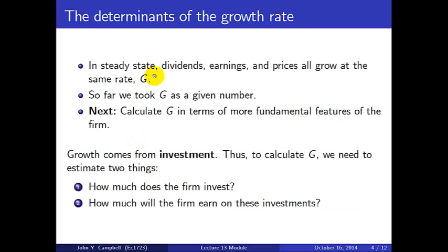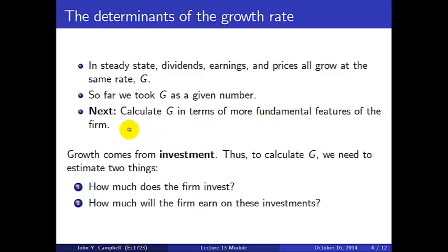In a steady state, by the very definition of a steady state, all variables are growing at the same rate. So dividends, earnings, and prices must all be growing at this common rate G. The Gordon growth model takes G as a given number. What we now want to do is calculate G in terms of more fundamental features of the firm.